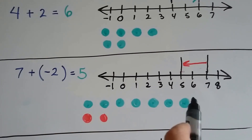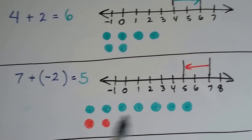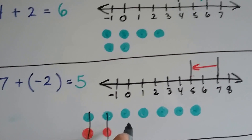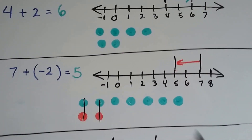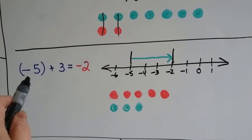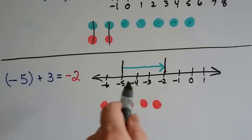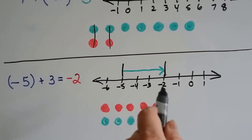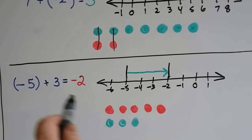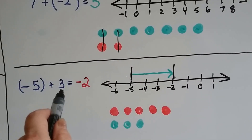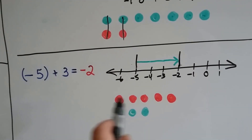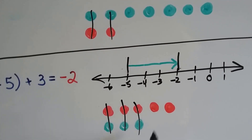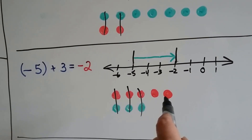When we've got 7 positive chips and we add 2 negative ones, it brings us to a positive 5 — these cancel each other out and we're left with 5 positive chips. When we've got negative 5 and we add 3: 1, 2, 3 — it gets us to negative 2. The 3 was not big enough to get us past zero, so we're still in the negative. We've got 5 negative chips, we add 3 positive ones, they cancel and we're still at 2 negative chips.